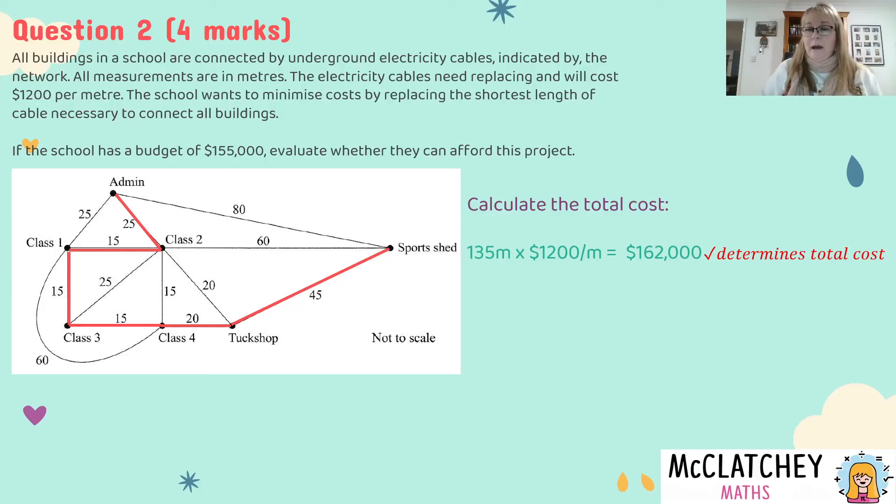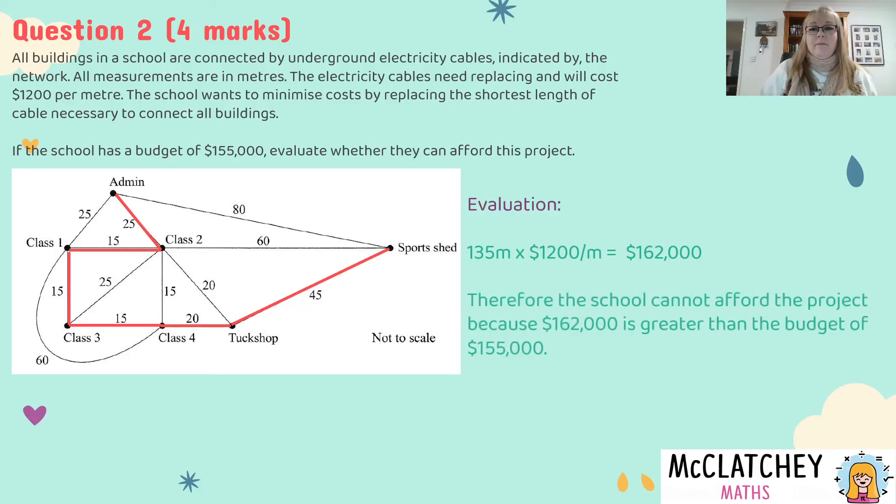Okay final mark now is this evaluation part. Evaluation means I need to make a decision and I need to explain it with mathematical reasoning. So here's my evaluation: the school cannot afford the project because the project budget is 155,000 and it's going to cost 162,000. So all I needed to say was that 162,000 is greater than the budget of 155,000. I've earned my fourth mark because I've determined if they can afford it and I've evaluated it.